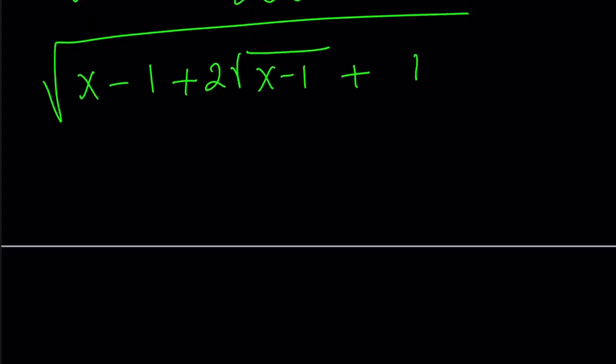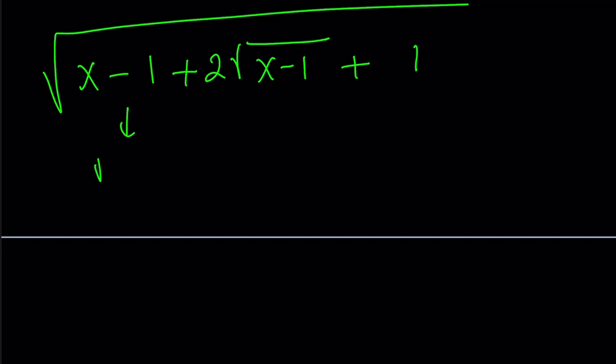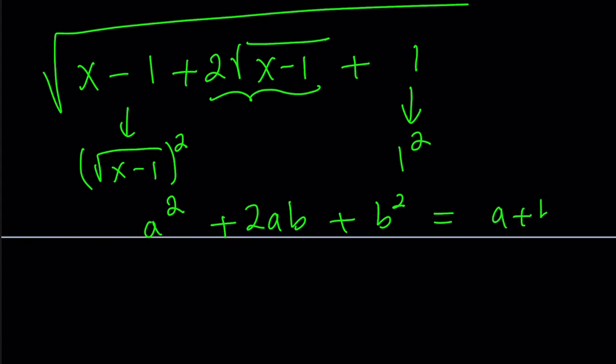Why? Because this is square root of x minus 1 squared. This is 1 squared. And this is 2ab. So I kind of got this pattern: a squared plus 2ab plus b squared. And as you know, this is a plus b quantity squared. Make sense?